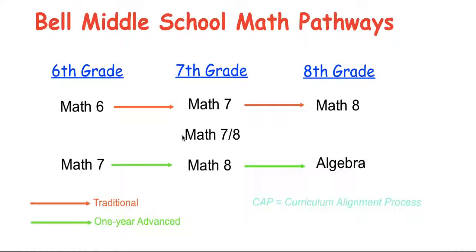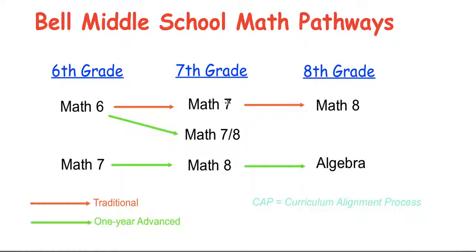There is also a way to jump into the one-year advanced track from the traditional path. Let's say you came in 6th grade starting the traditional path — making sure you have all your background skills and haven't skipped any CAP documents. There is a class called Math 7-8, available for students who, upon successful completion of Math 6, including teacher recommendations, test scores, and end-of-year progress, can move from Math 6 in 6th grade into Math 7-8 in 7th grade. Math 7-8 is a combination class that covers a full year of Math 7 and a full year of Math 8 in one year. After that class, you would then move into Algebra in your 8th grade year.